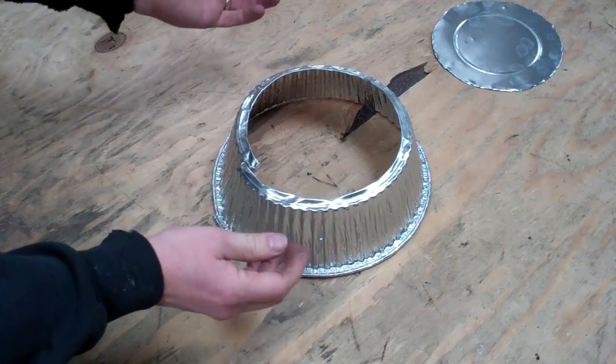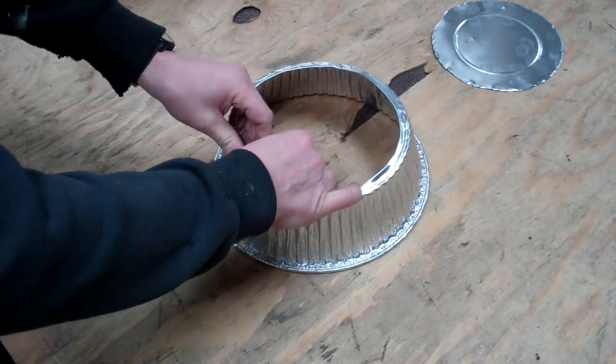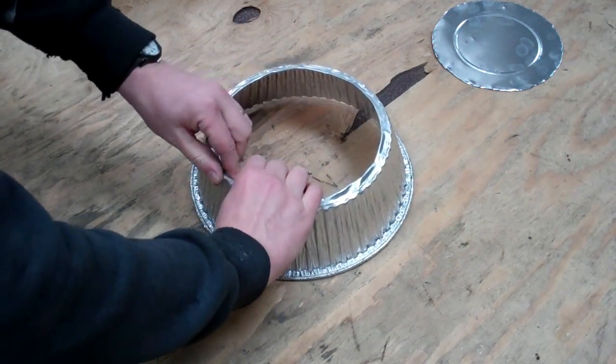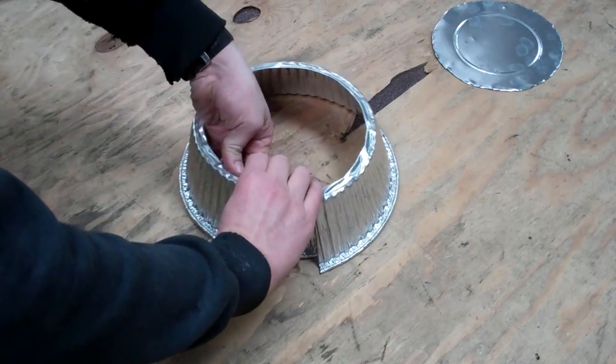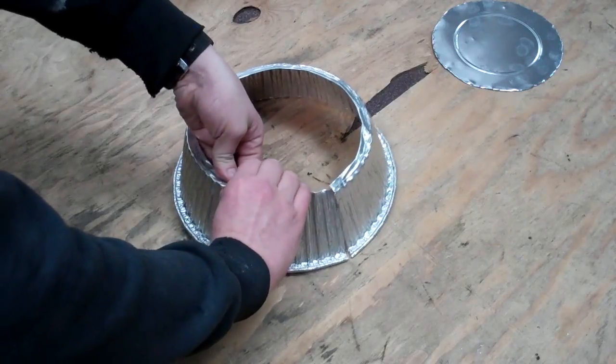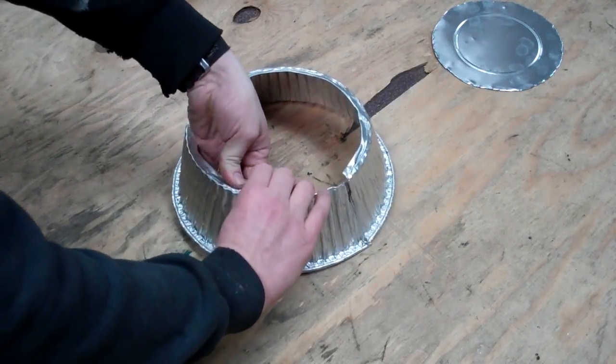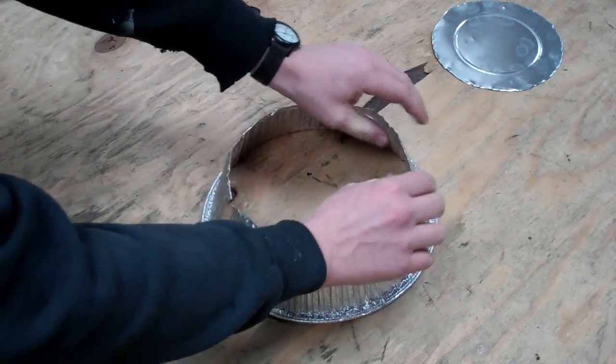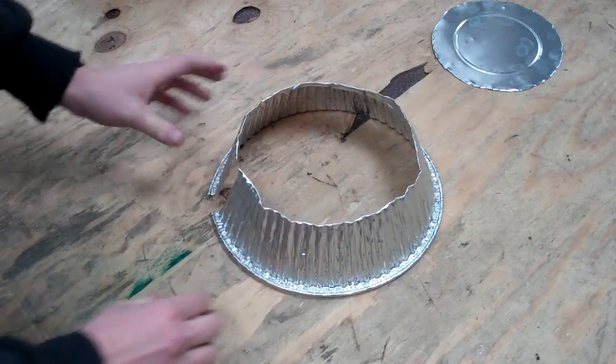And then we'll go back and roll it the rest of the way over, giving it a nice edge that's not sharp at all and should provide a little bit of strength to the windscreen as a whole. Okay, there's the first fold, and then I'm going to go back and fold it pretty much right to the rim of the crinkly part. Okay, so now I've got an edge that's at least not jagged sharp.